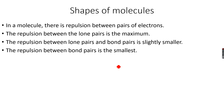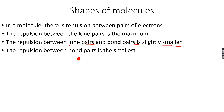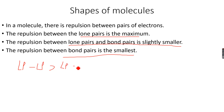The repulsion between two lone pairs is the highest. The repulsion between lone pairs and bond pairs is slightly smaller than lone pair–lone pair repulsion. The repulsion between bond pairs of electrons is the smallest of all three. So: lone pair–lone pair (LP-LP) repulsion is stronger than lone pair–bond pair (LP-BP) repulsion, which is stronger than bond pair–bond pair (BP-BP) repulsion.